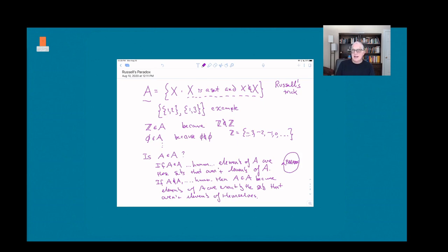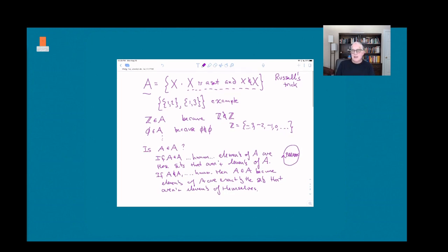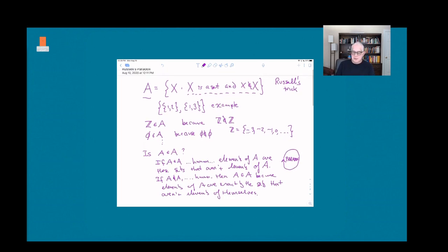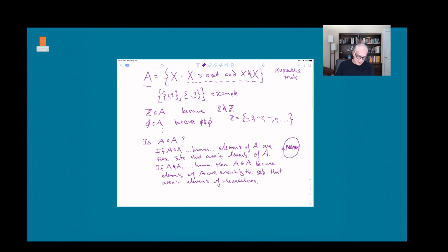So he hastily added an appendix to his book in which he said Professor Russell has caused me some serious problems here, and I'm going to work on this some more and try to fix it. But the fix that he proposed turned out to have other kinds of problems with it.